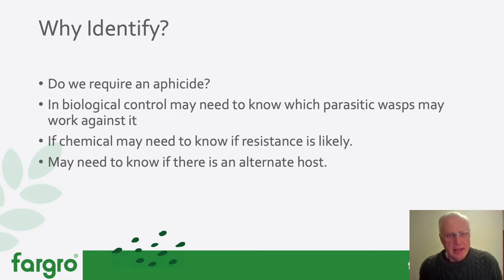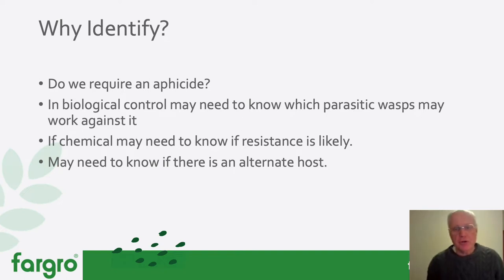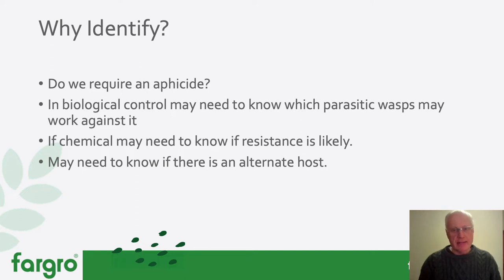So why identify? If you have a pest problem it's useful to know whether we actually require treatment for an aphid or not. In biological control, it's helpful to know which parasitic wasps or predators will work against it, so we can target control more precisely. If you're using chemicals, it's useful to know whether the pest will be resistant to what you intend to use, and it may also be helpful to know the host range of the aphid species.